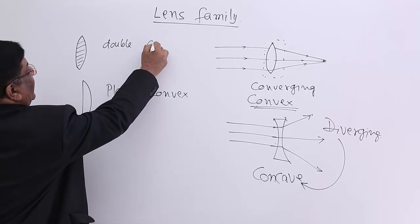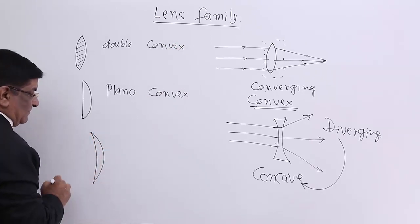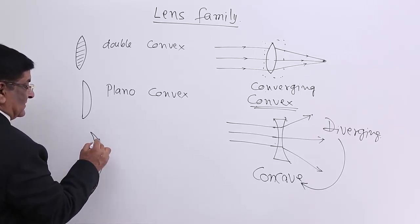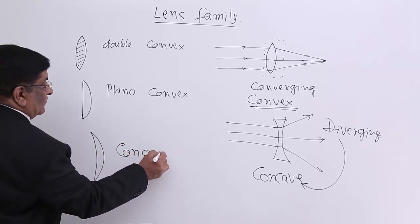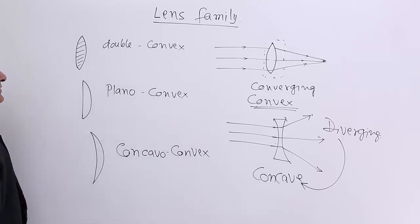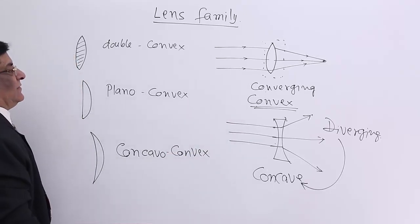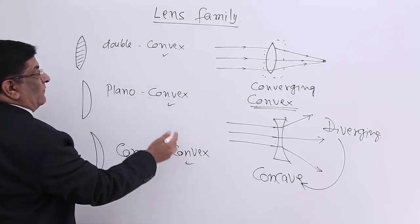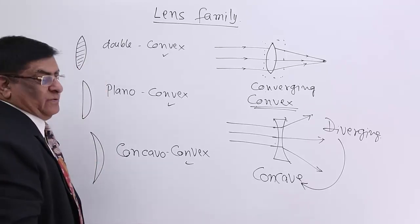The third member is the concave-convex lens — also thick at the centre and thin at the corners, with one side convex and one side concave. All three of these perform converging action, so all three belong to the convex family. Their surname is convex; the prefix tells whether it is double, plano, or concave-o.